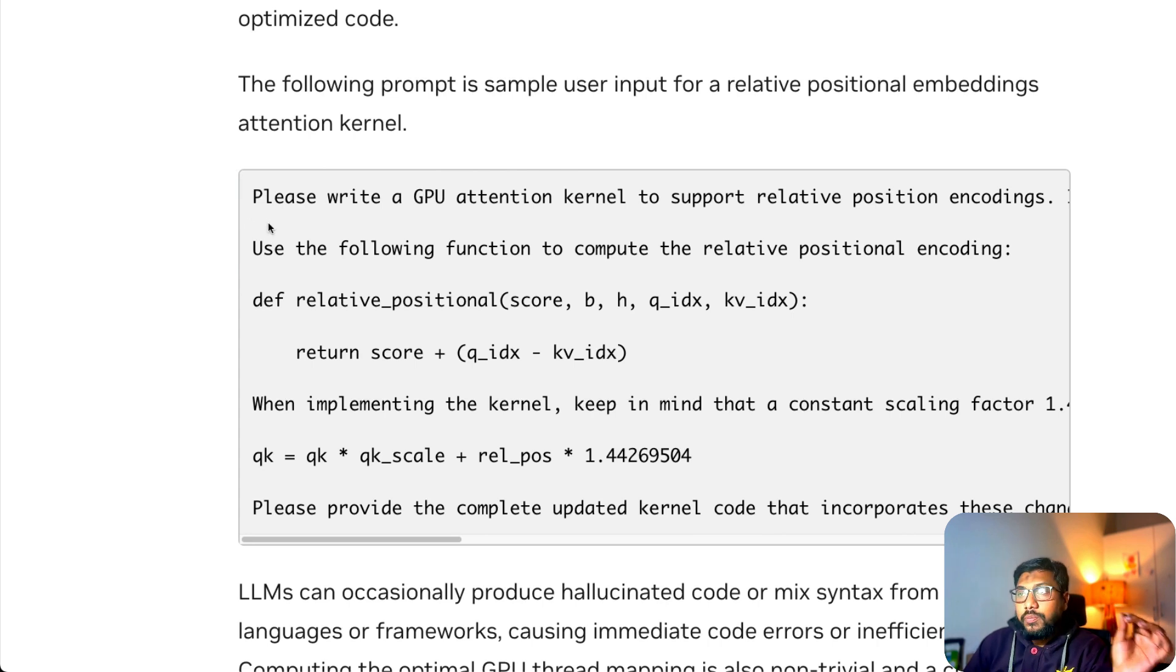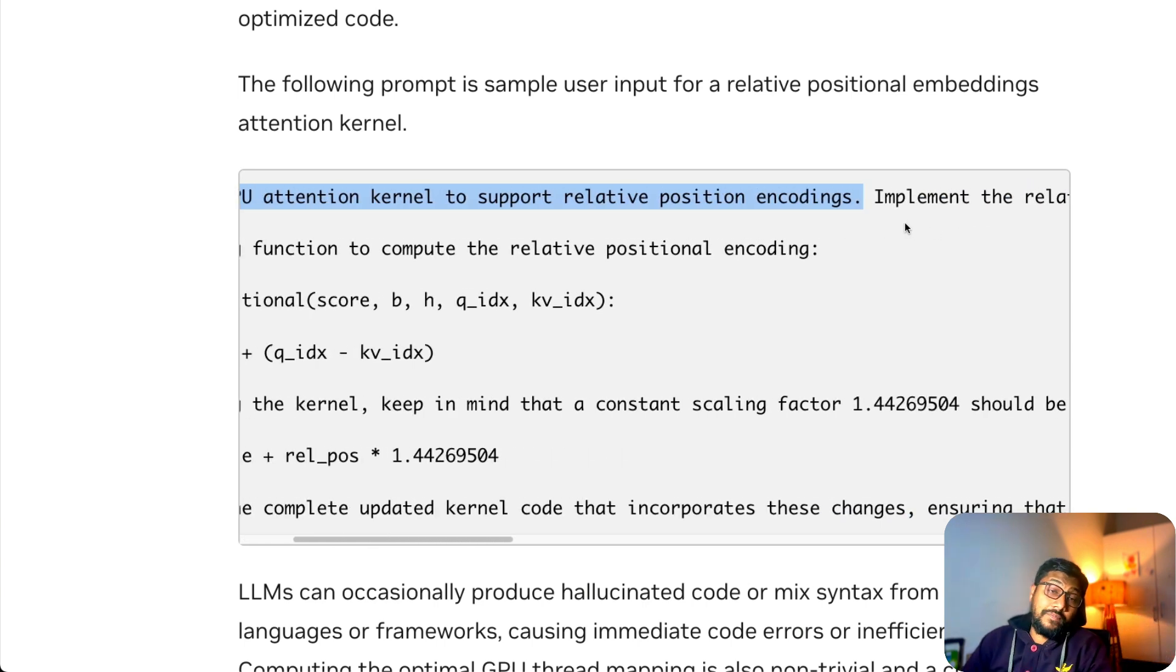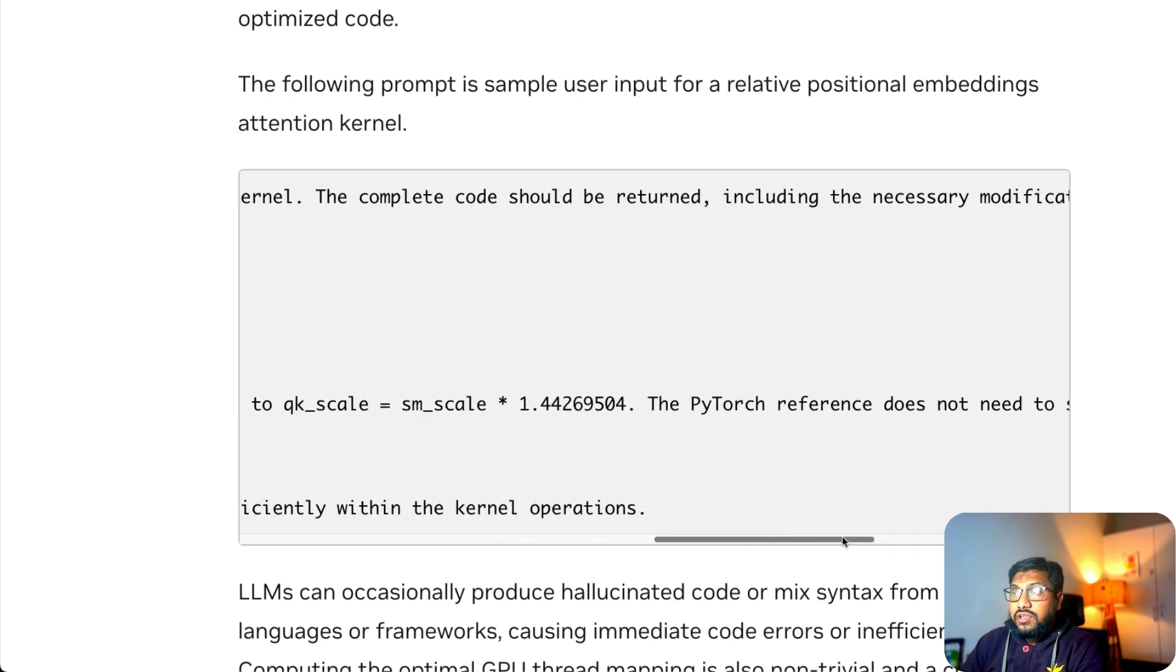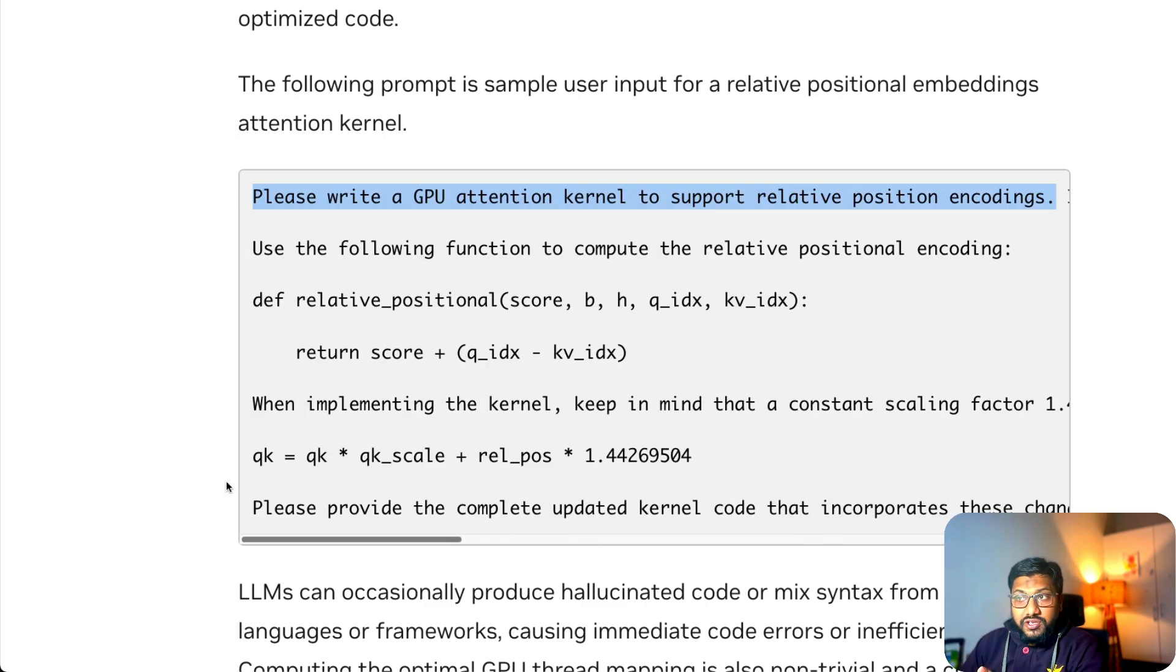What NVIDIA engineers did is they used a simple prompt here: 'Please write a GPU attention kernel to support relative position encodings.' If you're not familiar with relative position encodings, this is one of the things that people use to extend the token limit or context window of LLMs. If you search for an option called RoPE, you would come across something like relative positional encodings. 'Implement the relative position encoding on the fly within the kernel. The complete code should be written including necessary modifications. Use the following function to compute the relative positional encoding.'